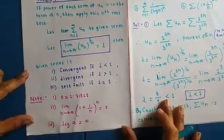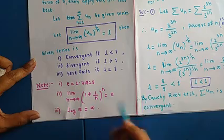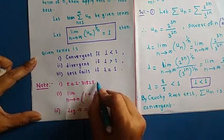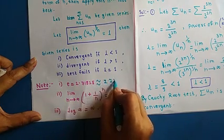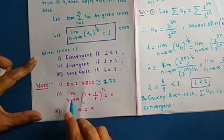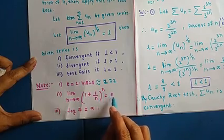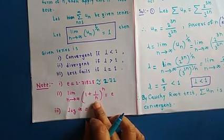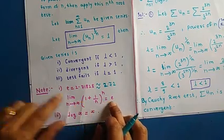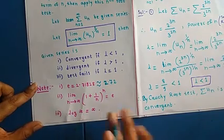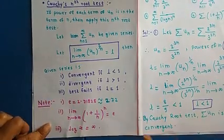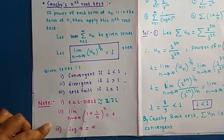Here are three standard results useful for solving problems. First, e = 2.71828, approximately 2.72. Second, the limit as n tends to infinity of (1 + 1/n)^n equals e — and if n is replaced by √n, then (1 + 1/√n)^(√n) also equals e. Third, log(∞) = ∞. Remember these basic results.